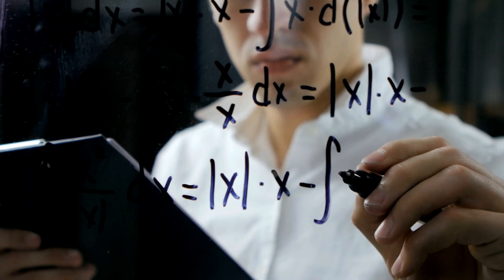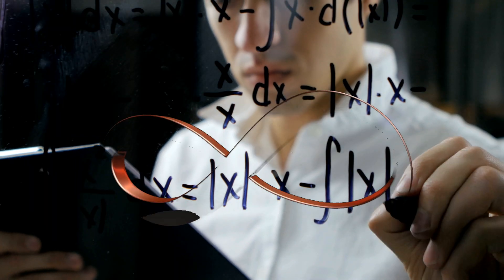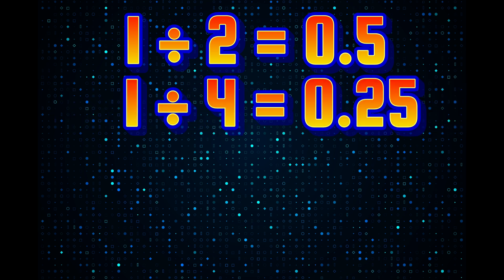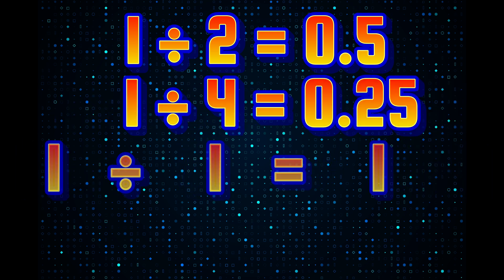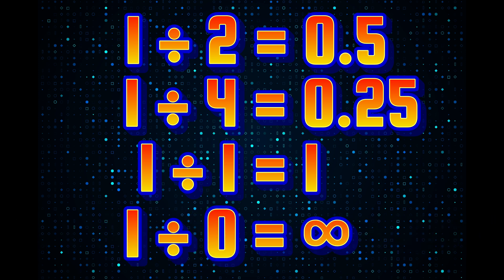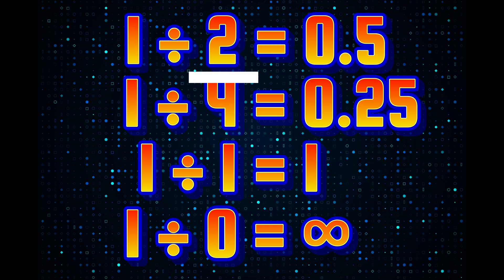Many ancient mathematicians said that the answer will be infinity. Let's see how. When you do 1 divided by 2, you get 0.5. When you do 1 divided by 4, you get 0.25. And when you do 1 divided by 1, you get 1. From these three calculations, can you see the relation between these numbers? When the divisor was a larger number, the answer was a smaller number. And when the divisor was a small number, the answer was a big one.